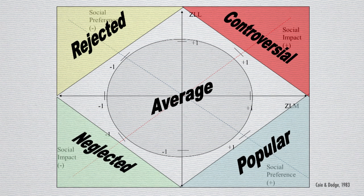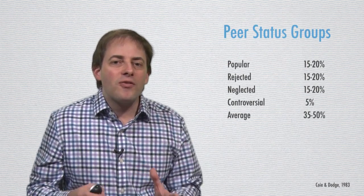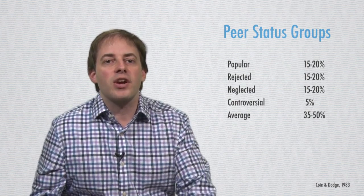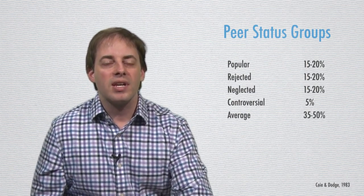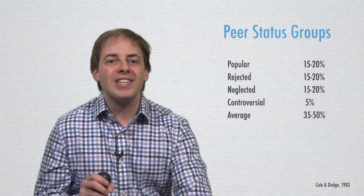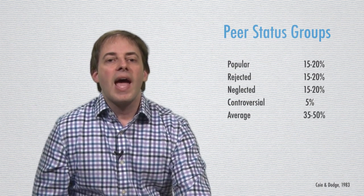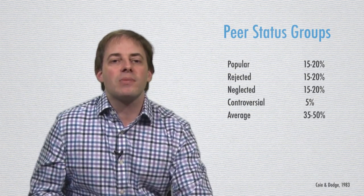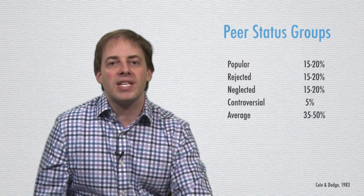And only those that meet these extreme criteria are popular, rejected, neglected, or controversial. In fact, statistically, the data suggests that about 15 to 20% of kids are going to be popular, rejected, or neglected. The controversial group is a really interesting small group, and then about half or sometimes just under half of kids will fall into the average group.